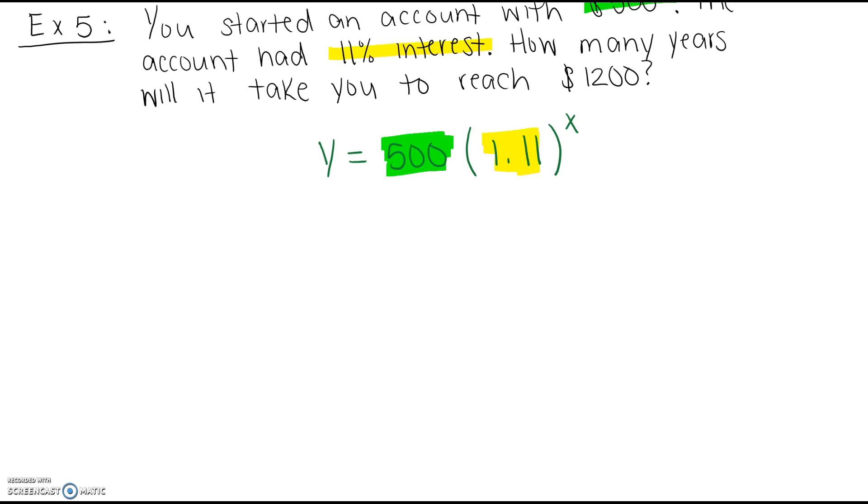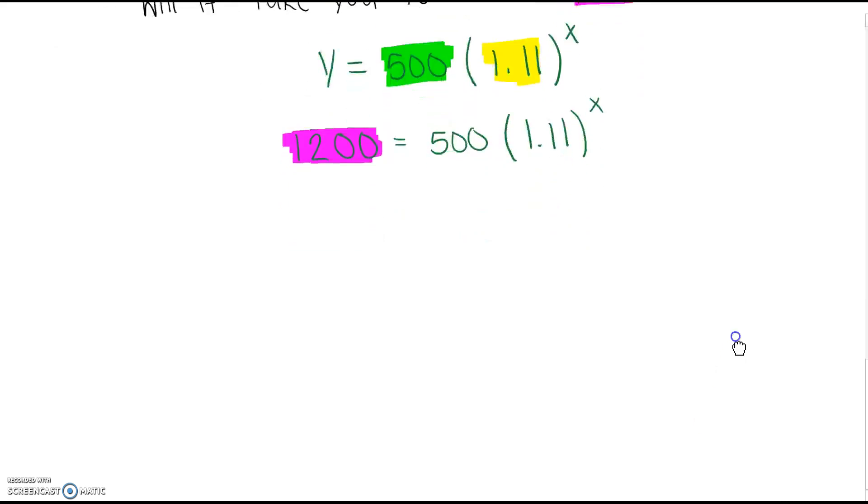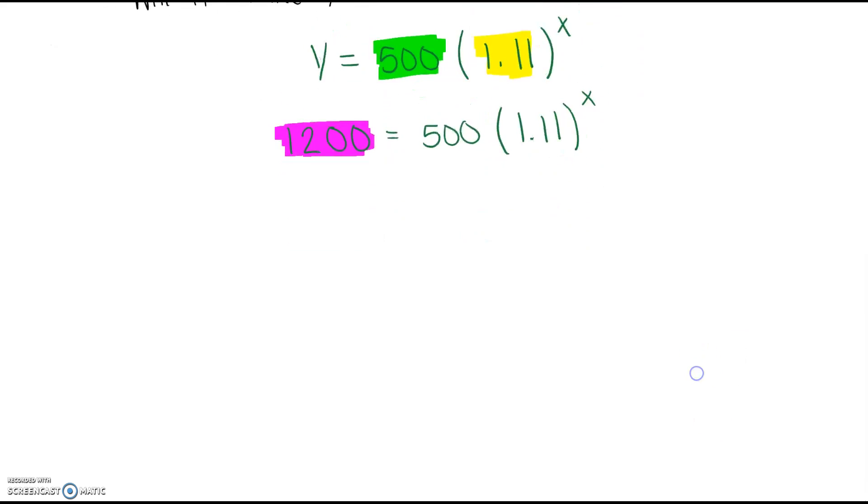So if we substitute 1,200 is our y value, that's going to equal 500 times 1.11 to the x power. So in the past you may have used guess and check for this. But now we can use logarithms. So to start solving for x we should divide by 500. So 1,200 divided by 500 we get 2.4.